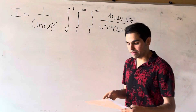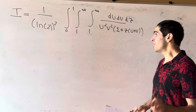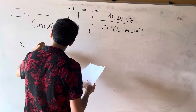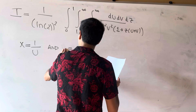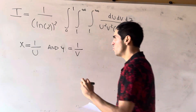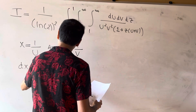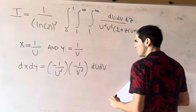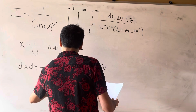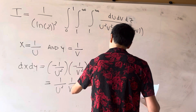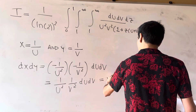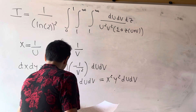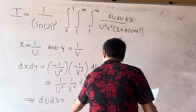We have a ln(2)² factor again from the Jacobian. Now we use another substitution: since we have 1/u and 1/v, it makes sense to let x = 1/u and y = 1/v. The Jacobian gives dx dy = (1/u²)(1/v²) du dv, which is x²y² in the new variables, so du dv = (1/(x²y²)) dx dy.